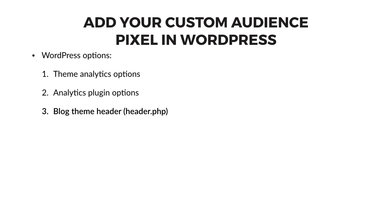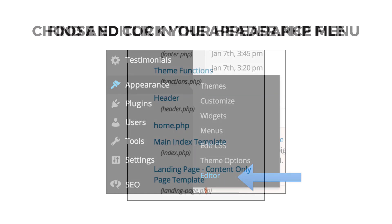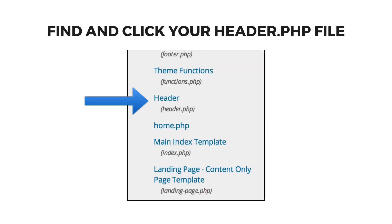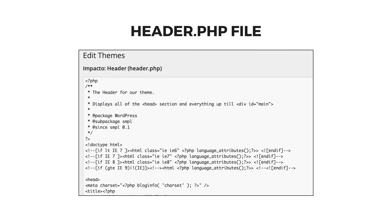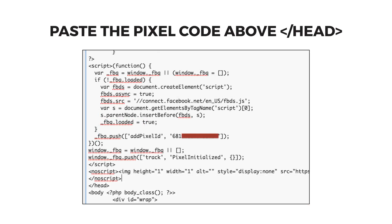For WordPress, you have three typical options for including your custom audience pixel throughout your site. If your theme includes an analytics option, you can paste your code in there. If you've uploaded an analytics plugin, you'll find a form to paste the code into there. If you have neither of these, you may need to include your pixel code in your site's header.php file. Log into your WordPress site's dashboard and choose appearance, then editor from the submenu. On the right side of the next page, click on the header.php file to open it in the theme editor. Simply find the head tag and scroll down until you see the closing slash-head tag. Paste in your custom audience pixel just above the closing tag, making sure you don't paste the code inside another code block. Click update to save your changes. Now every post and page on your WordPress site that shows the header will trigger visitors for future retargeting.